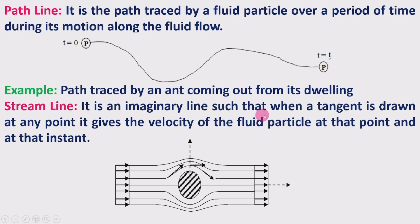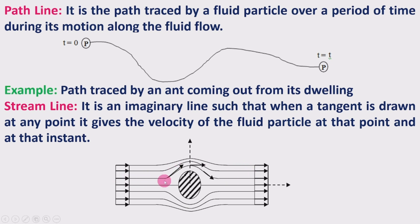Next is the streamline. It is an imaginary line such that when the tangent is drawn at any point, it gives the velocity of the fluid particle at that point and at that instant. In the fluid flow, these imaginary streamlines will be there, and if an object is present, the streamline will bend around it.